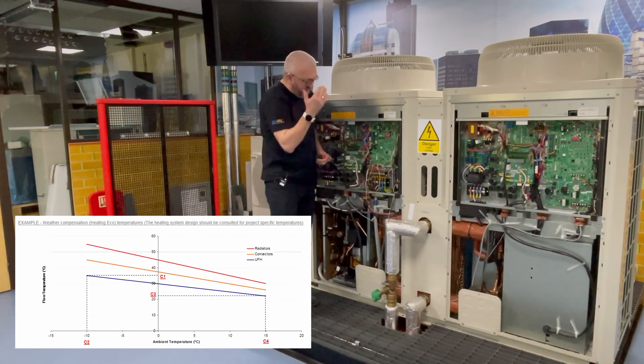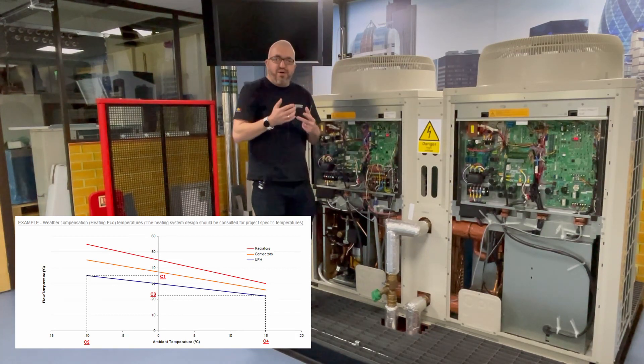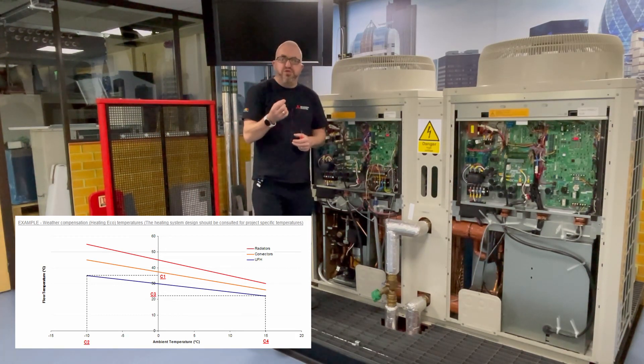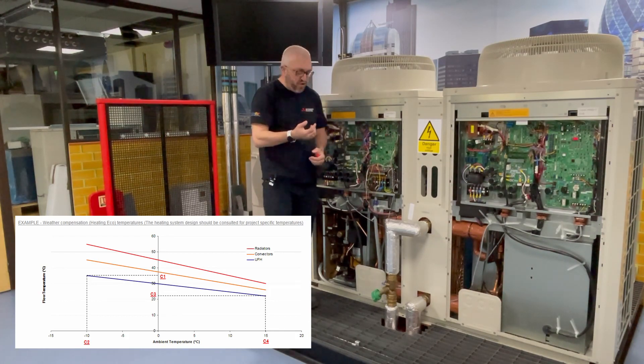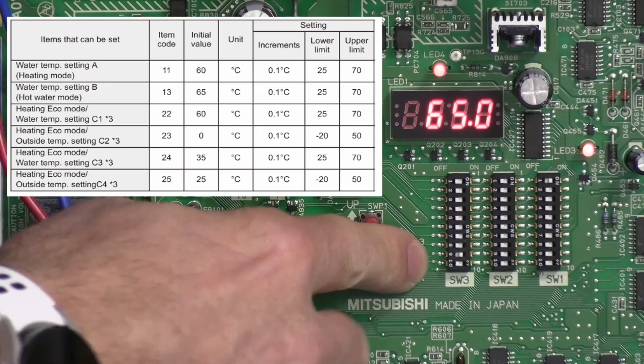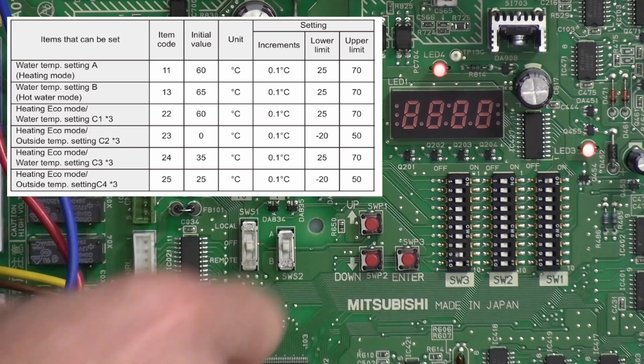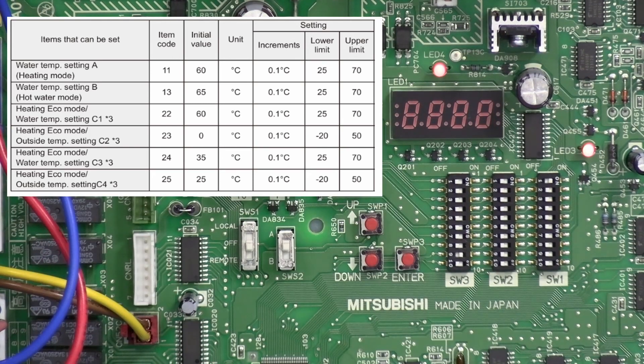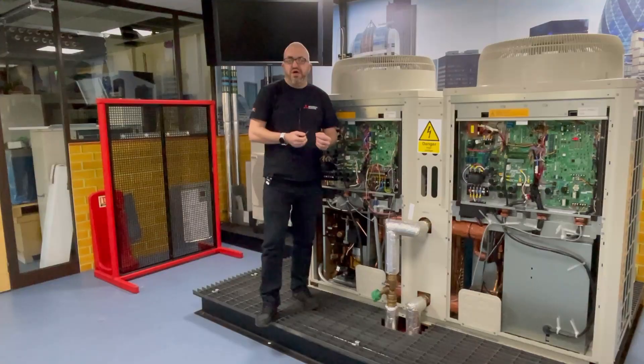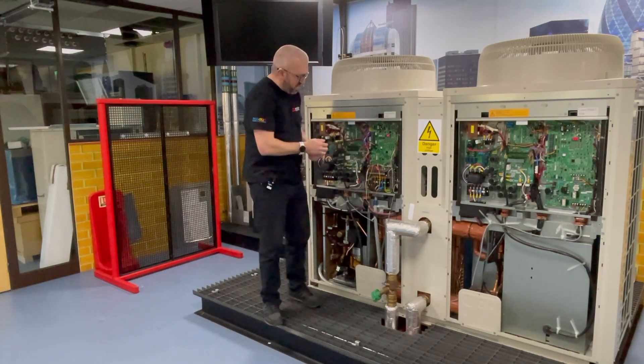We're going to say 65 degrees is our high flow temperature. Now we need to tell the system what ambient temperature we want it to achieve 65 degrees flow. So that's the next parameter, it's item 23. We're saying here zero degrees, so at zero degrees it's going to target 65 degree flow. Zero, I'd say that was a good setting, so let's leave that at zero.